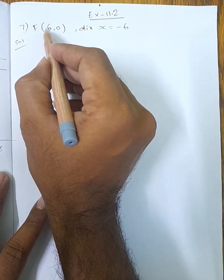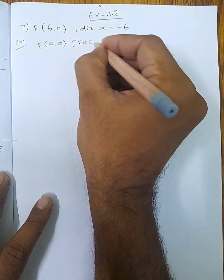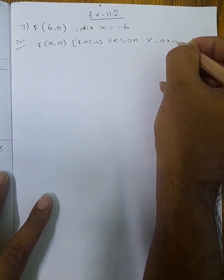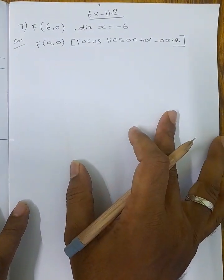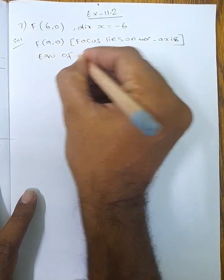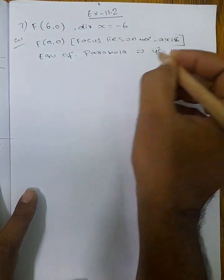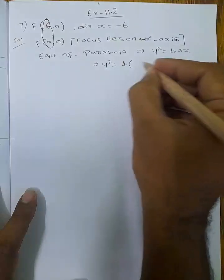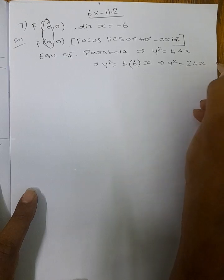Focus lies on the x-axis. Focus value (a, 0), so focus lies on positive x-axis at (a, 0). Formula: equation of parabola y² = 4ax. So y² = 4 × 6, therefore y² = 24x.